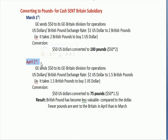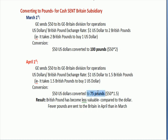On April 1st — maybe they're sending money every month to fund that operation — GE sends $50 to Britain. The exchange rate has changed: it now takes 1.5 British pounds to buy a dollar. So instead of getting 100 pounds when you send $50, you only get 75 pounds. Now we're looking at it from the other direction — dollars going to Britain, as opposed to British pounds coming back to the U.S.